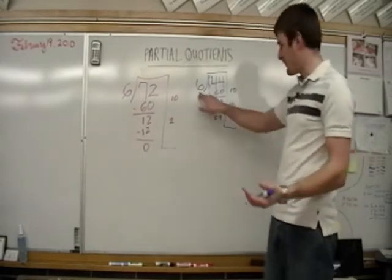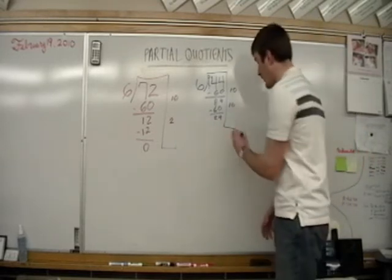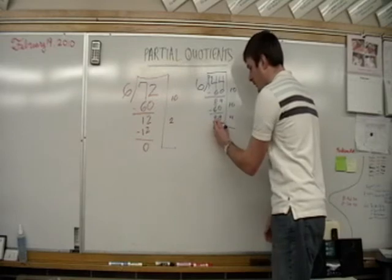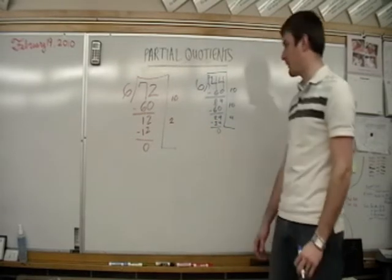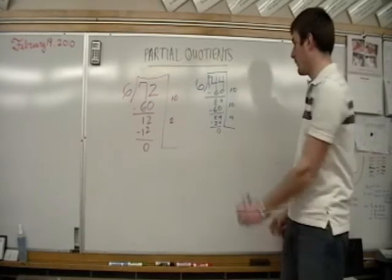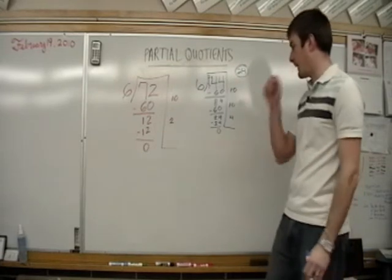Now, how many 6s will go into 24? Well, 6, 12, 18, 24. It's going to be 4. 6 times 4 gives us 24. We subtract it, and we are left with 0. Then we just add this up. 10, 20, and 24. Our answer is going to be 24. And obviously, we don't have any remainder.